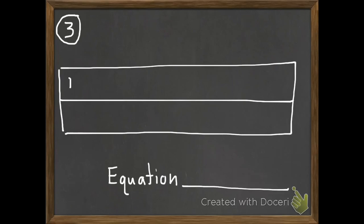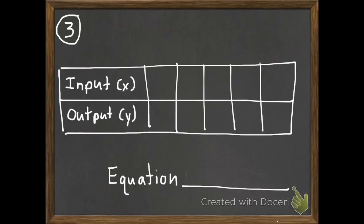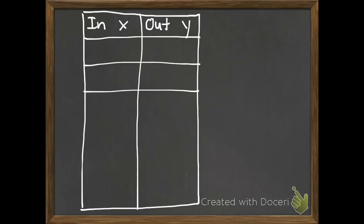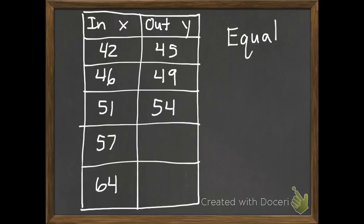Number three — same instructions: write an equation that describes the pattern, then use the equation to find the next two output numbers. We're going to use larger numbers. Our inputs are 77, 72, 66, 59, and 51. When we put in 77 we got out 72; 72 gave us 67; 66 gave us 61. Go ahead and find the equation and complete the table. You've got one more after that — same instructions. Bring your notebook to class tomorrow, and if you have any questions I can help you out.